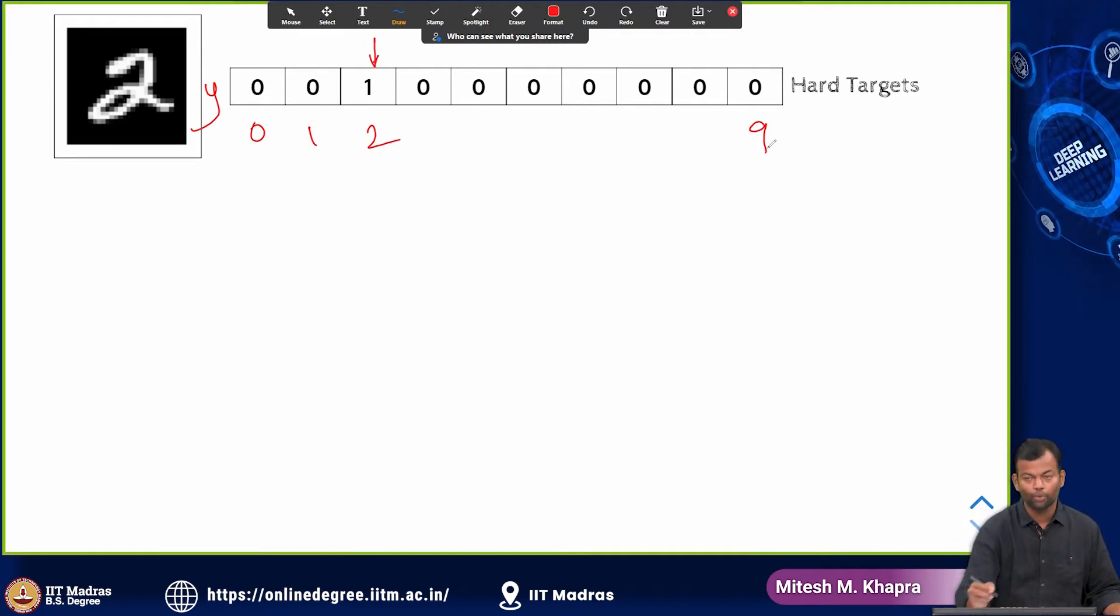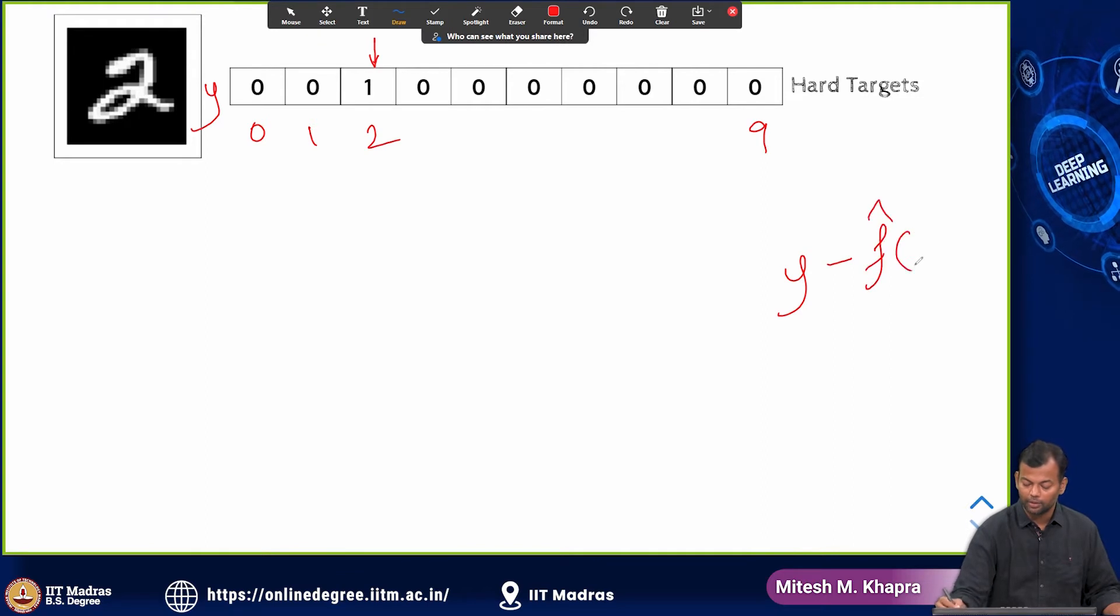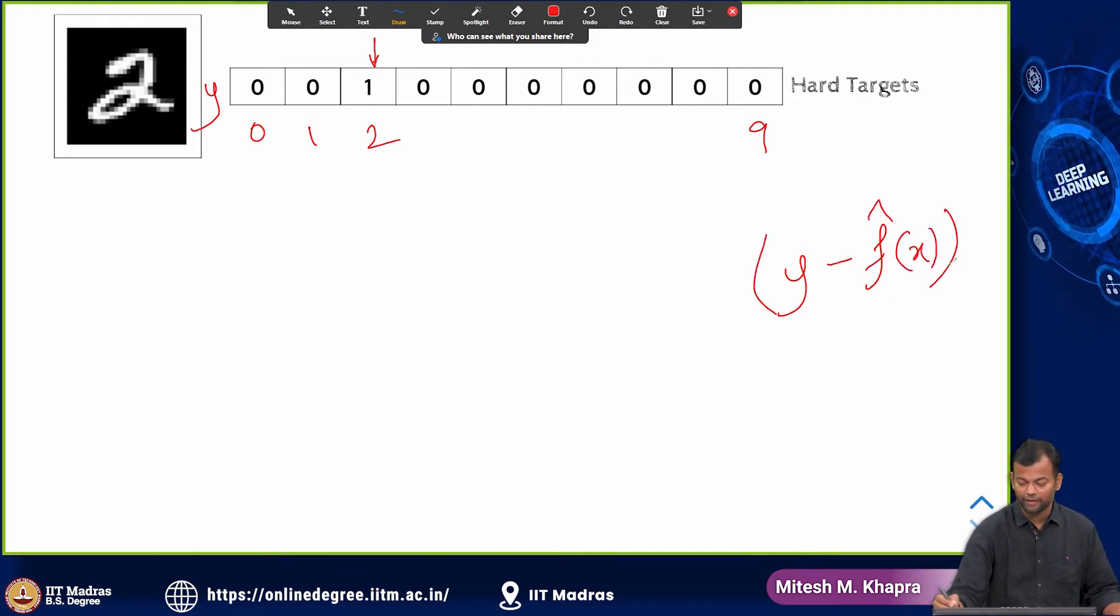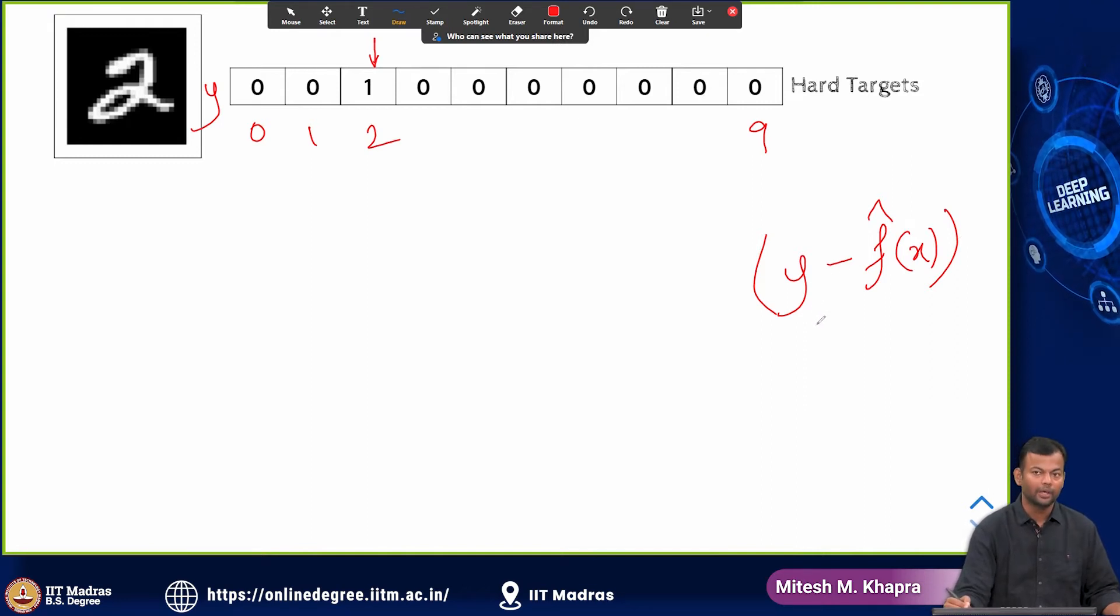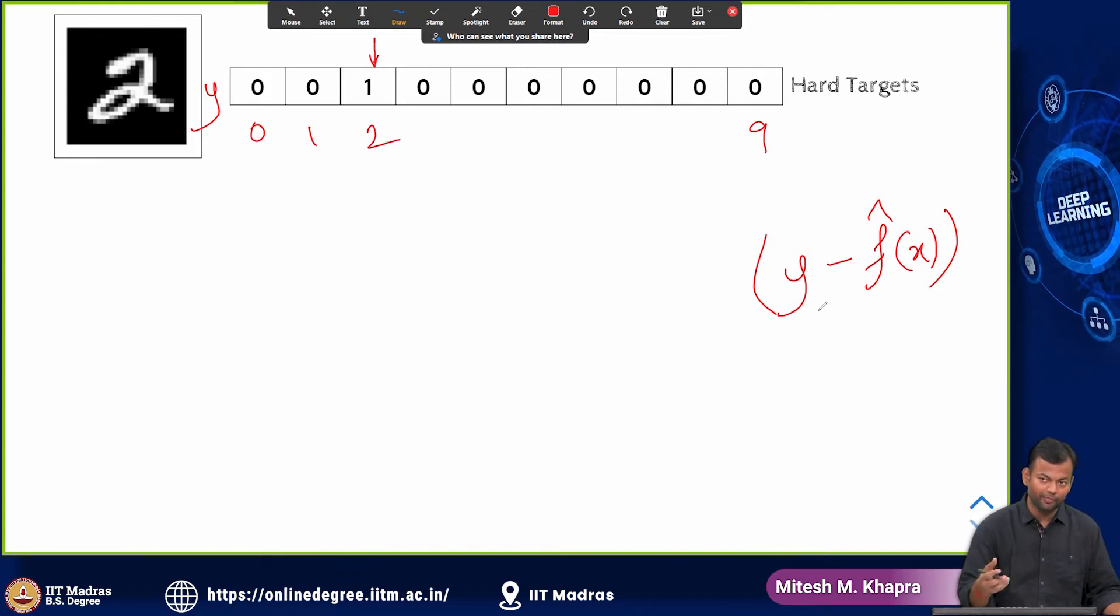Now this is what your true y is and you are trying to predict y hat or f hat of x which is very close to this true y. And that could lead to overfitting because if you have a lot of parameters, you know that this error you can drive down to 0.